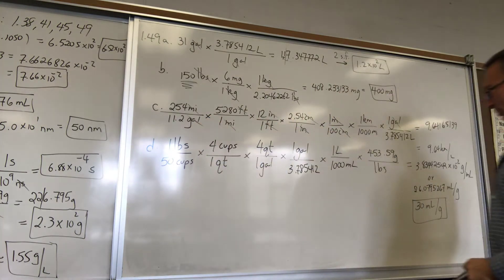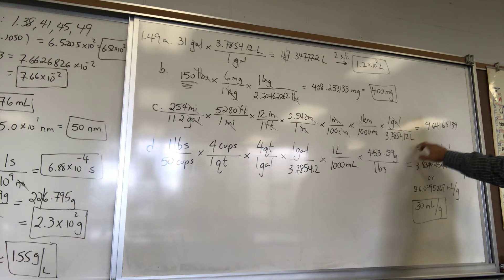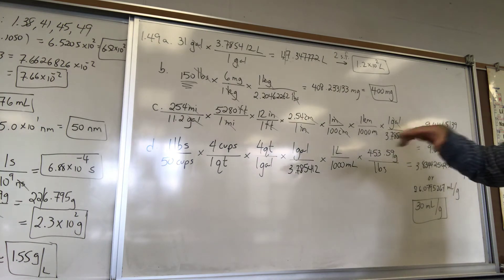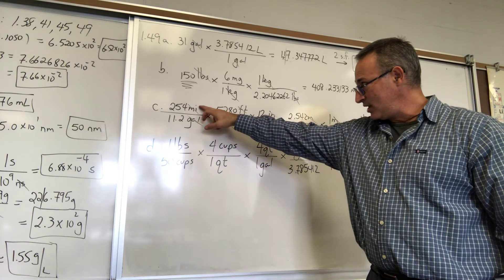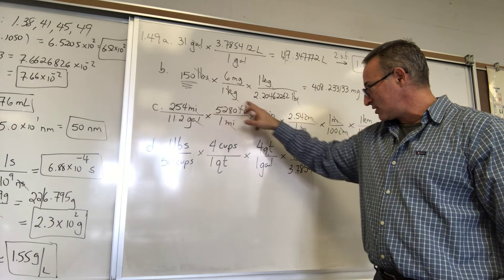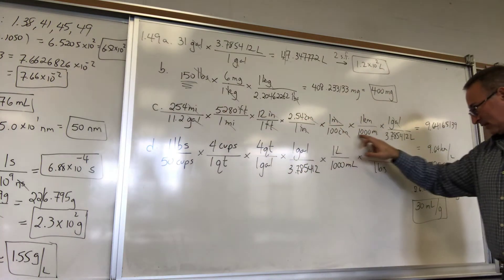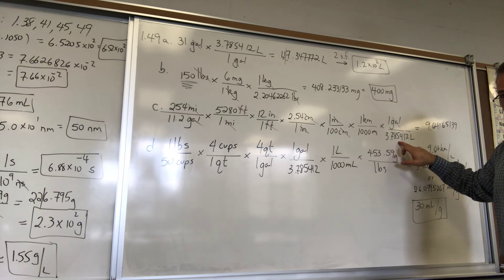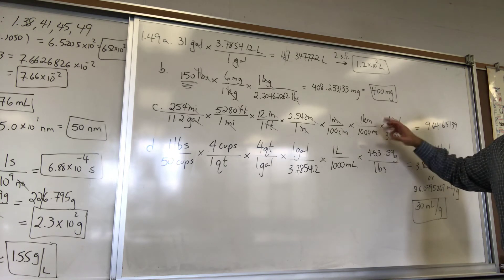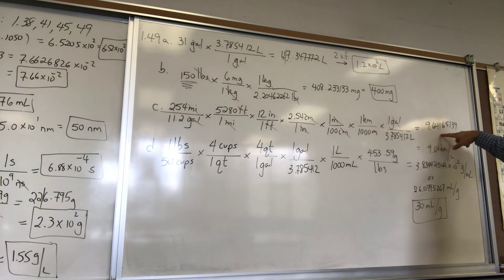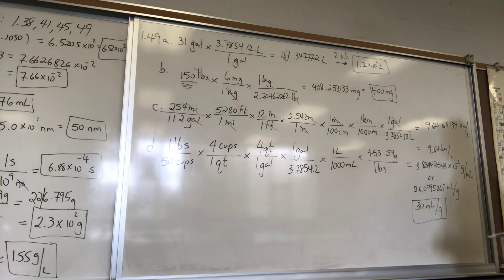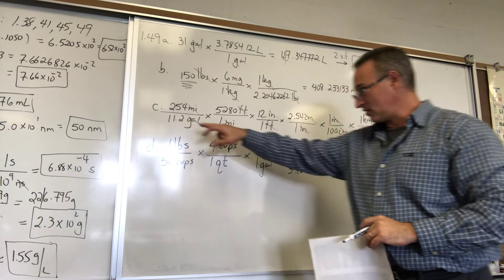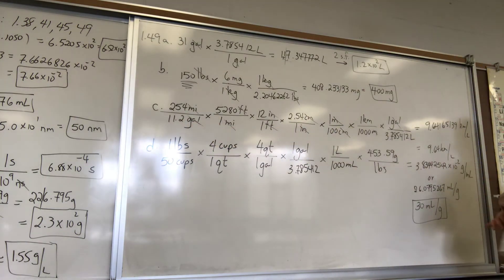So what are we left with at the end is kilometers and liters, which is what we wanted. So in our calculator, I will enter this divided by that, times this, times this, times this, divided by that, divided by that, divided by that. So if it's in the bottom, you divide. If it's in the top, you multiply. What you get at the end is 9.64165139 kilometers per liter, which you then round down to three significant figures. And that's why you get 9.64 as your final answer, kilometers per liter.